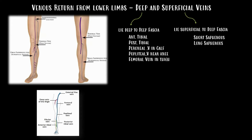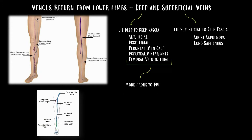The deep veins are more prone to DVT or deep vein thrombosis, which we have discussed in our previous videos. The superficial veins — the short and the long saphenous veins — are more prone to varicose veins, which we will discuss in detail in this video.